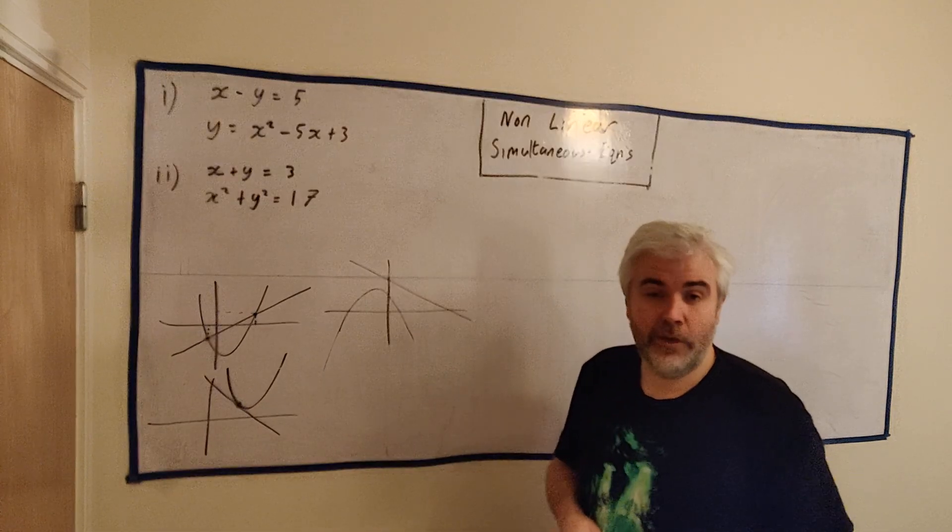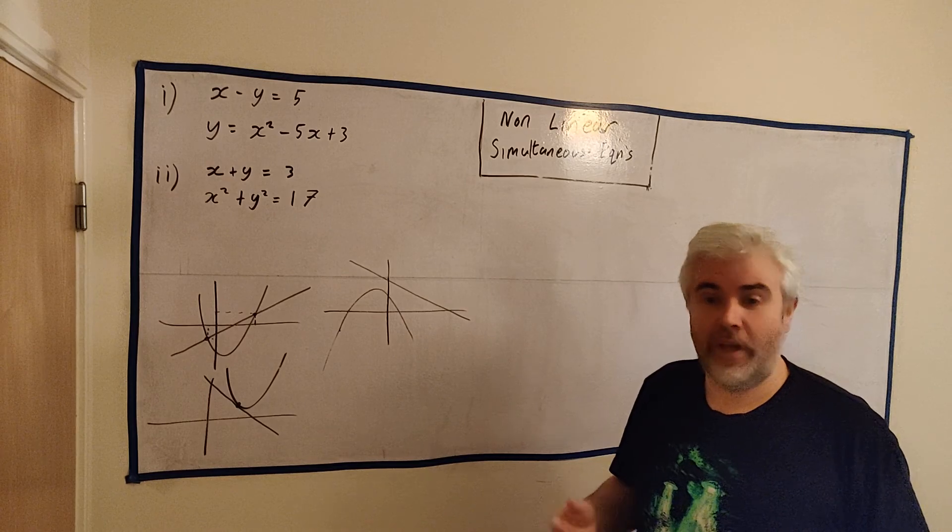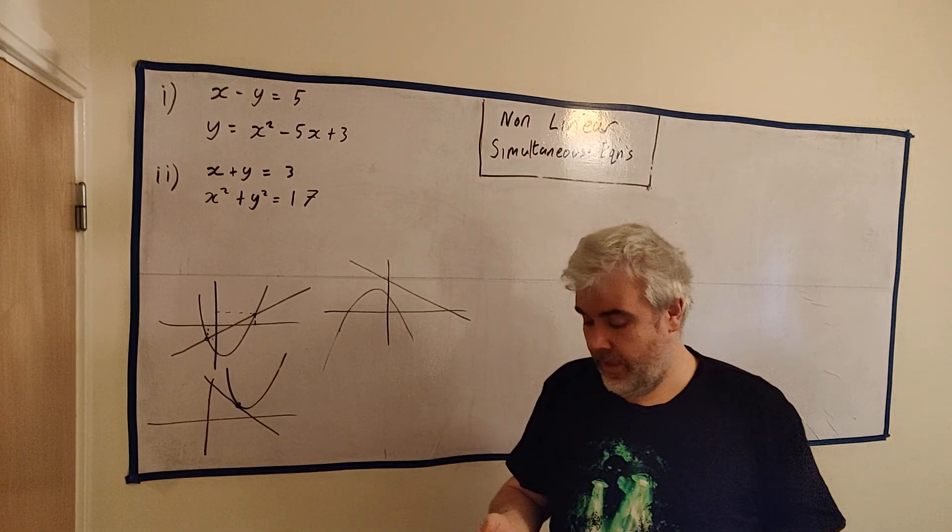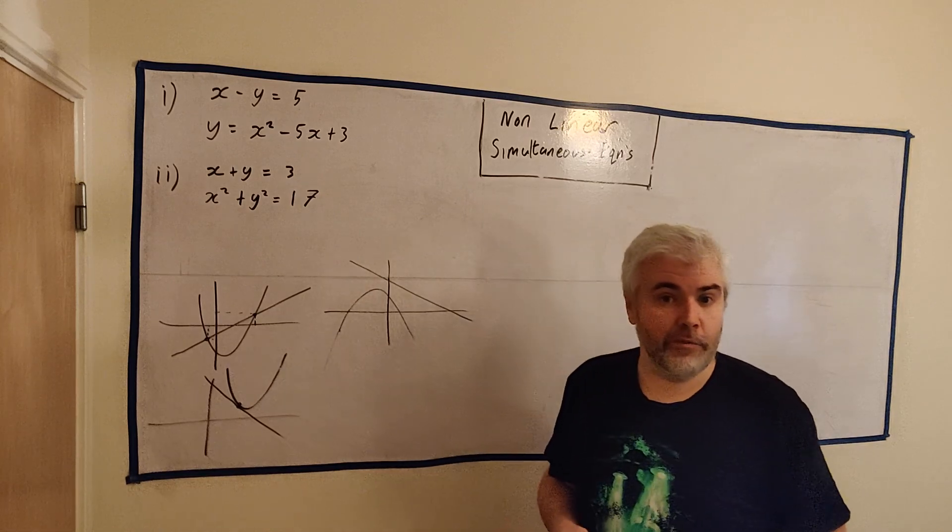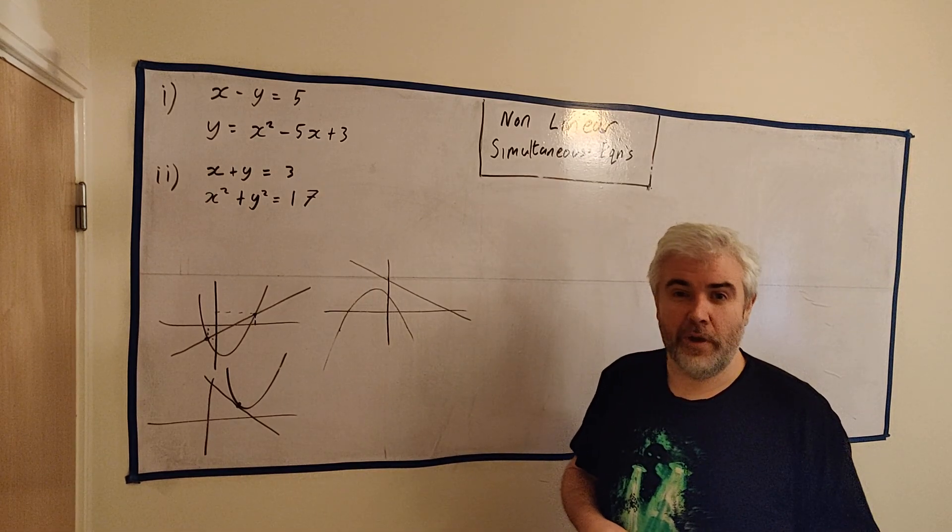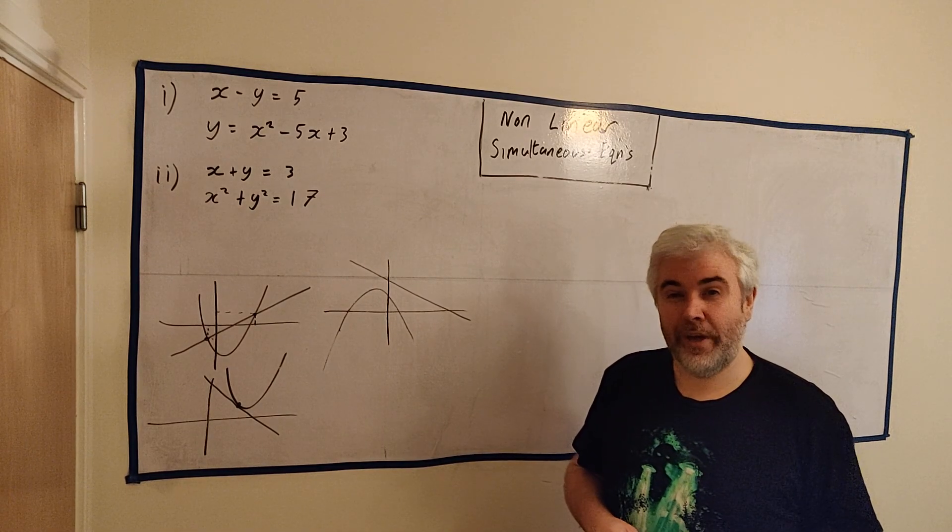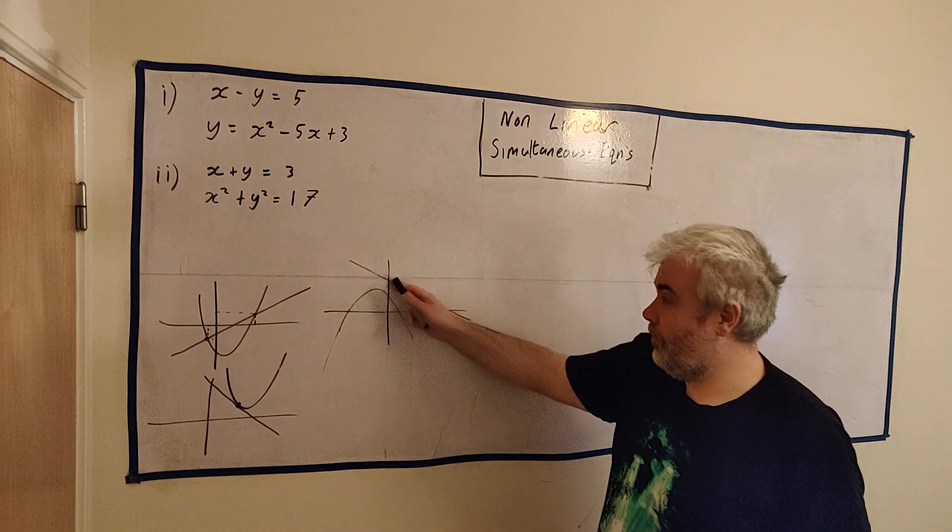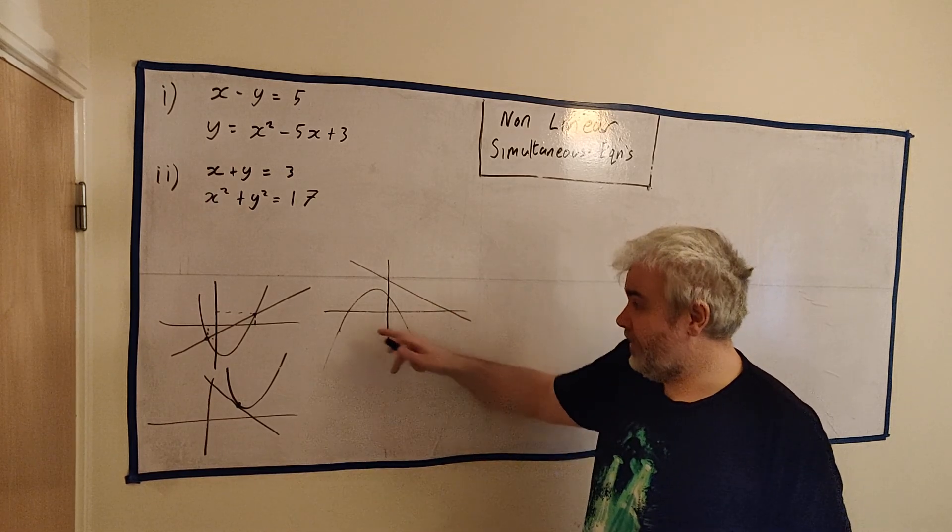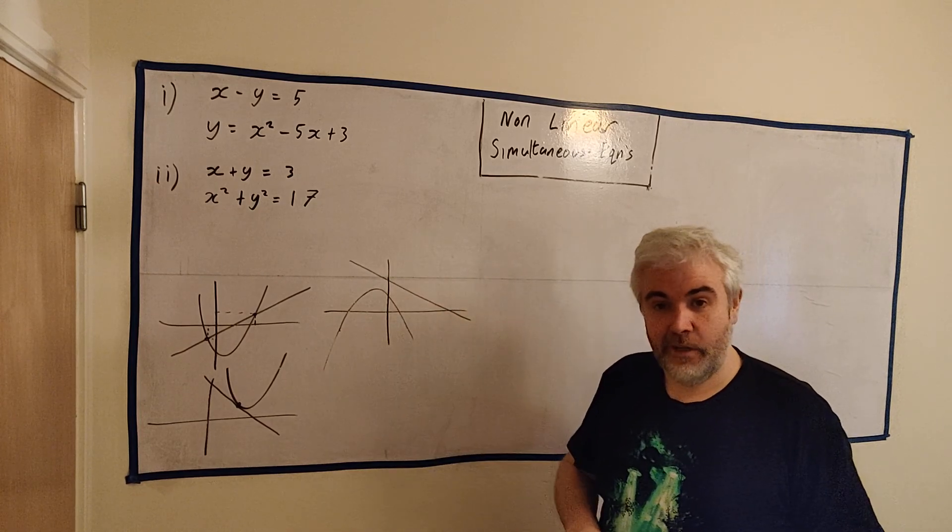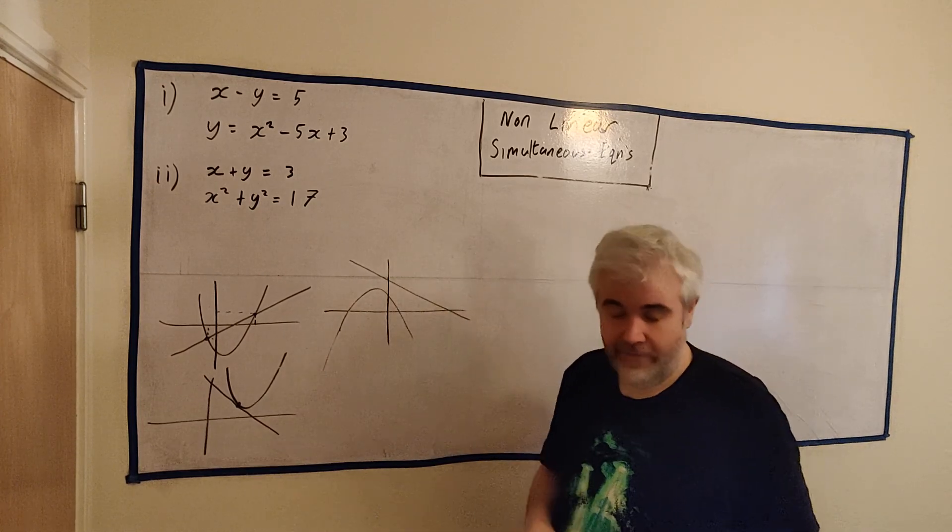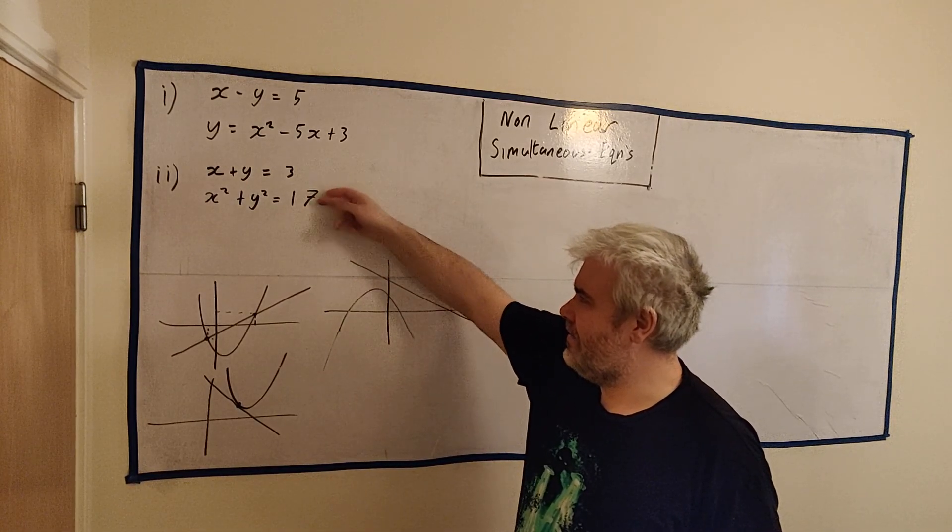And then the other possibility, of course, is we could have a quadratic and we could have a line that goes here. This quadratic goes on forever and ever. This line actually never touches. I'll give a third example. And just show you that we will get no answer. And the reason we get no answer is because when we get to a quadratic, when we're trying to solve it, the quadratic will actually have a minus number in the square root.